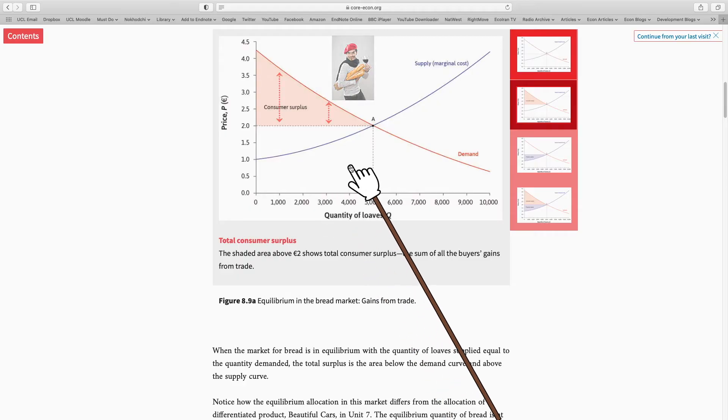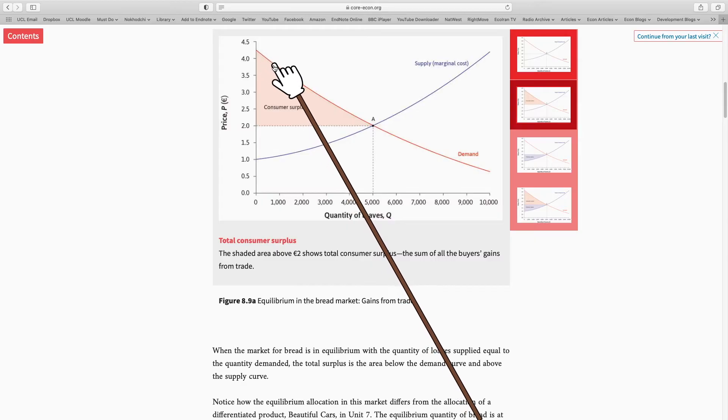So this area represents all the surplus going to consumers. Why? Because all the demanders on our demand curve were willing to buy a loaf of bread for a price higher than two euros. But in the end they only paid two euros.